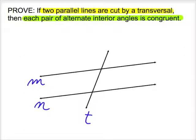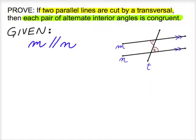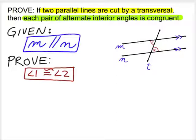Remember the way to show lines are parallel. Our job is to show that each pair of alternate interior angles is congruent. If we show that one pair of alternate interior angles is congruent, then the same logic will apply to the other pair. So let's pick a pair of alternate interior angles and call them 1 and 2. Our goal is to prove that angles 1 and 2 are congruent. We're given that M and N are parallel, and our job is to prove that angles 1 and 2 are congruent.